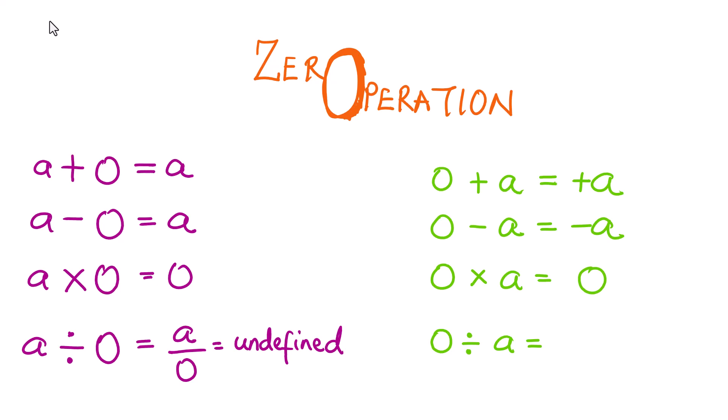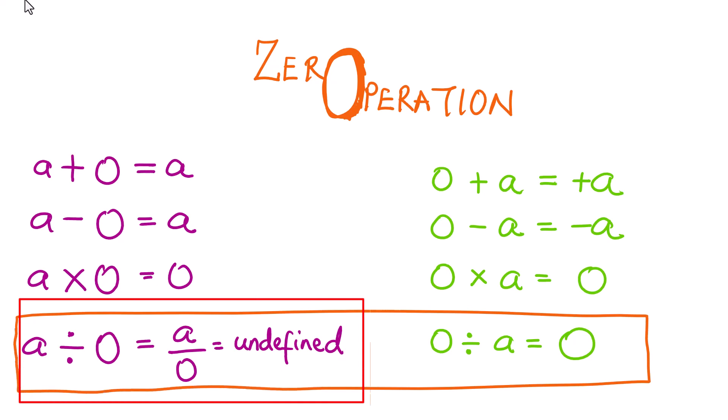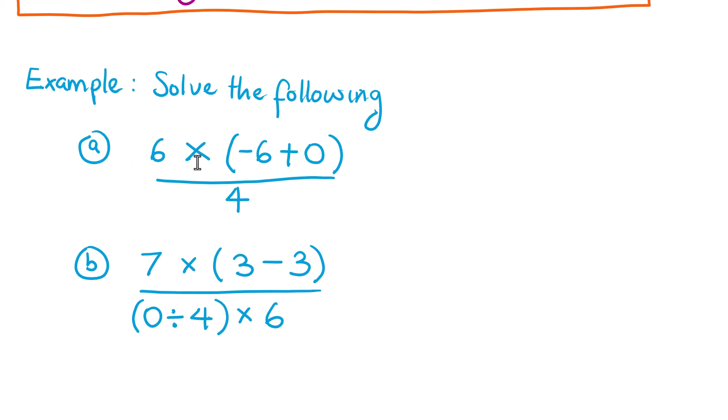If we have zero individuals and divide them into any number of groups, we are not going to make any groups, so the result remains zero. This makes zero divided by a unique compared to a divided by zero: when we have a number of items and create zero groups, we get an undefined number of groups — and as a increases, we head toward an undefined result, which is infinity.